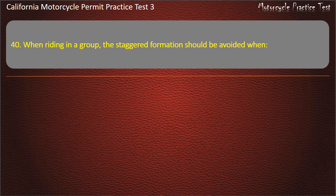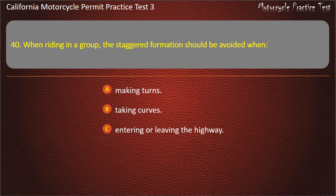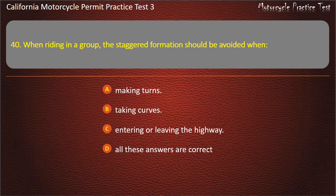Question 40. When riding in a group, the staggered formation should be avoided when: making turns, taking curves, entering or leaving the highway, or all these answers are correct. Answer: All these answers are correct.